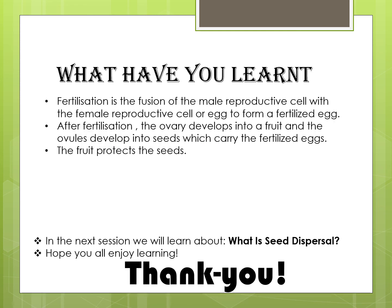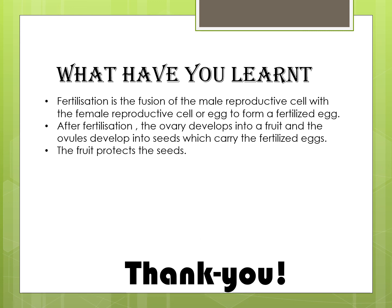So what we have learnt today is: fertilization is the fusion of the male reproductive cell with the female reproductive cell or egg to form a fertilized egg. After fertilization, the ovary develops into a fruit and the ovules develop into seeds, which carry the fertilized egg. The fruit protects the seed. Hope in the next session we will learn about seed dispersal. Hope you enjoy learning. Thank you, grade 5.